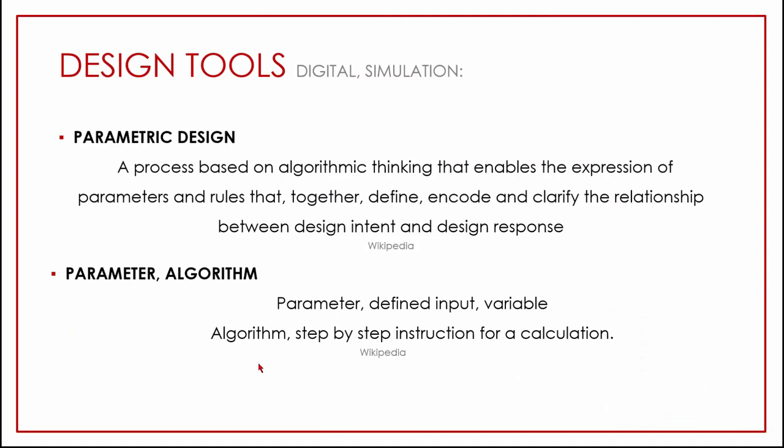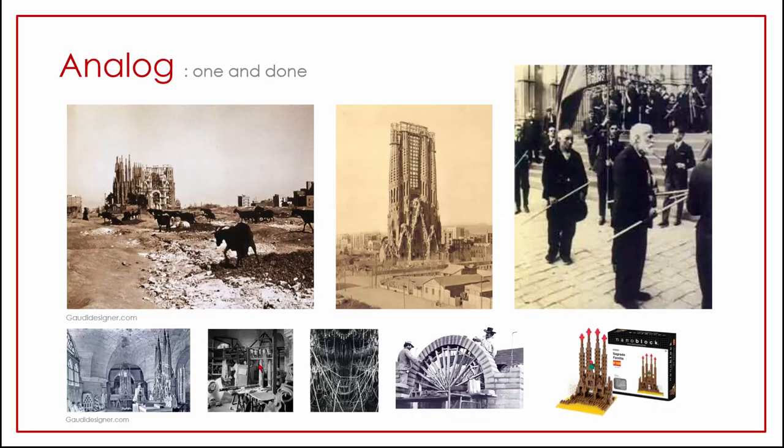Parametric design is a way of thinking that adjusts and enables parameters and rules to define the relationship between design intent and design response. You want to try something and see how it turns out by controlling the inputs, parameters, and numbers going into different command strings. It can get very complex or very simple. A parameter is a defined input, and an algorithm is the instruction for how to apply that parameter.